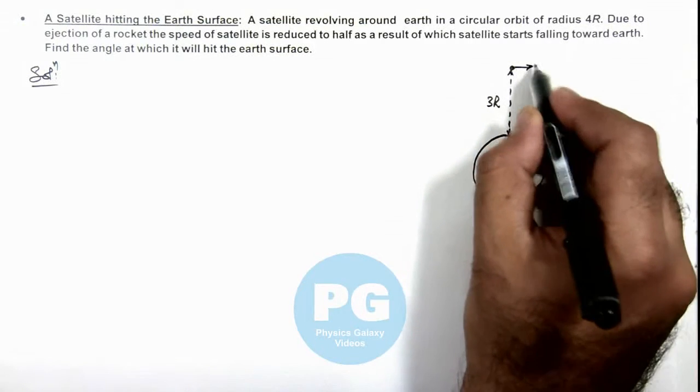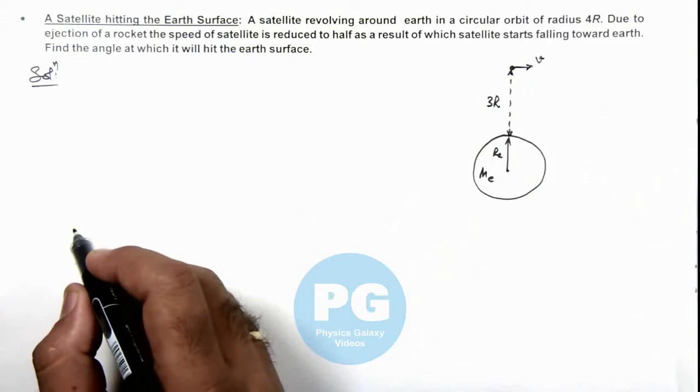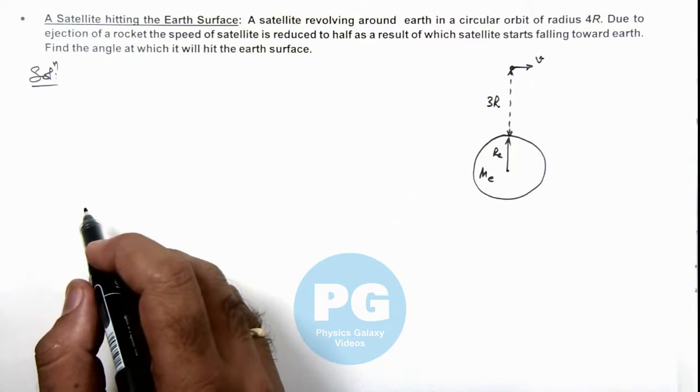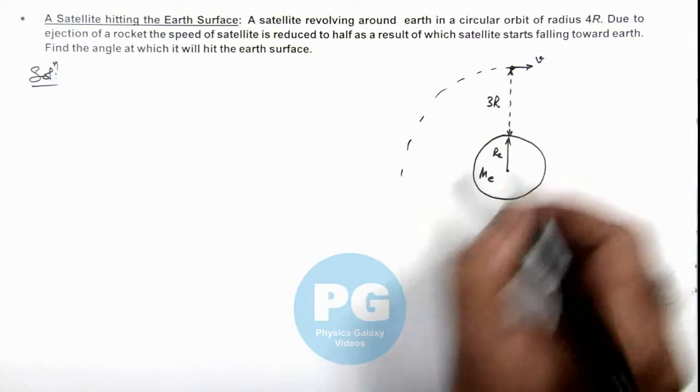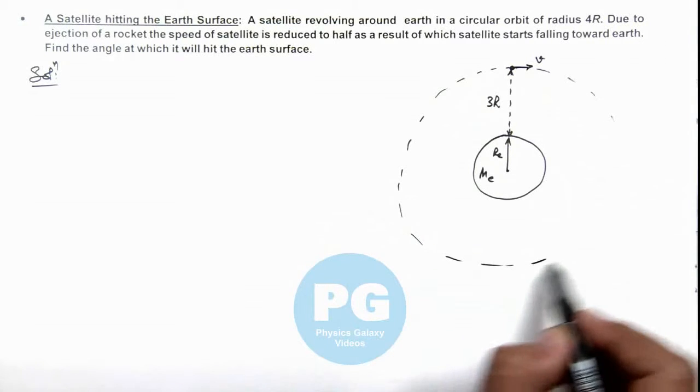The satellite would be moving with a velocity v. If the speed is v, the satellite would be revolving in a stable circular orbit of radius 4R.